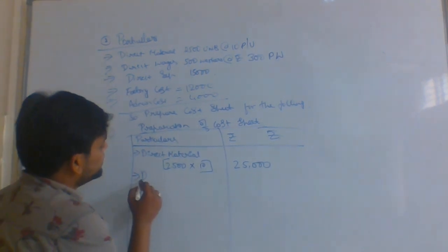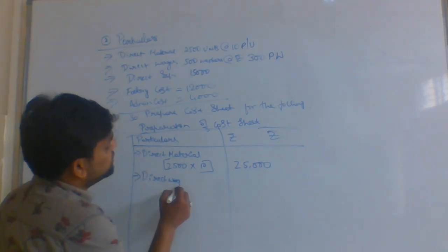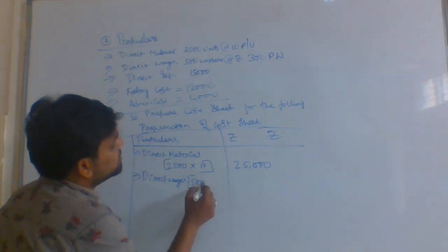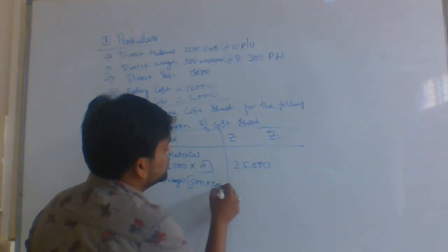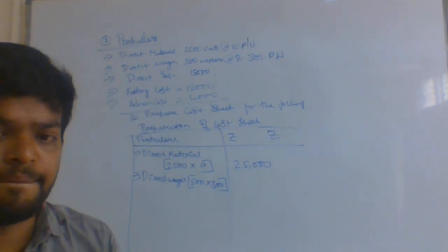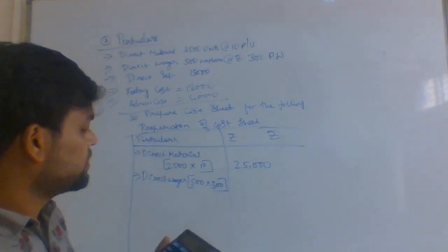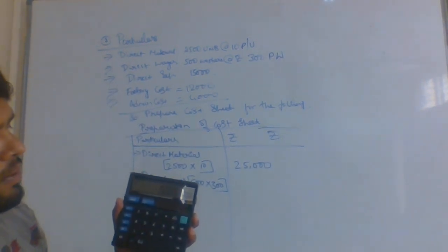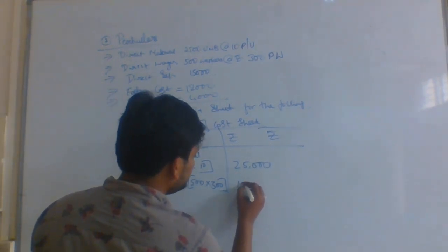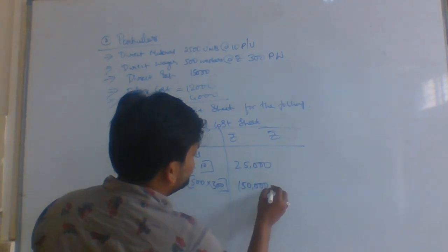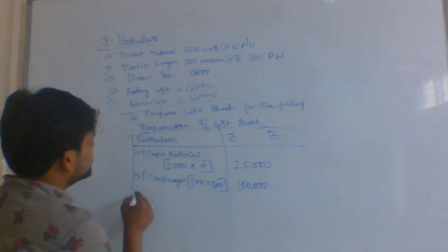The second point is direct wages. How many workers are there? Total there are 500 workers. For each worker, they are given 300 rupees per worker. So 500 into 300 — how much? That is 1,50,000 — the amount they are paying to the workers.